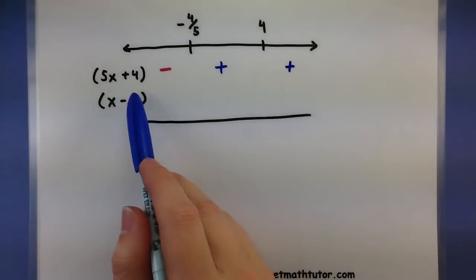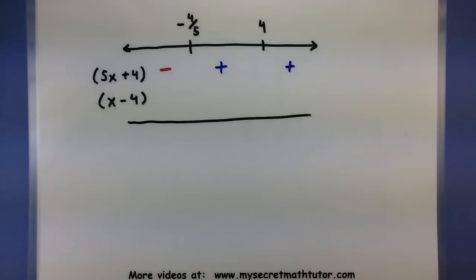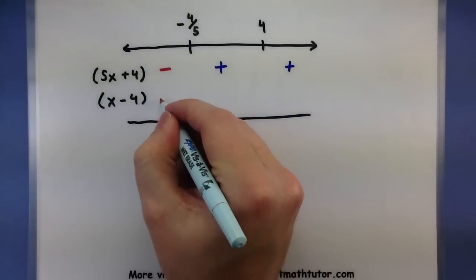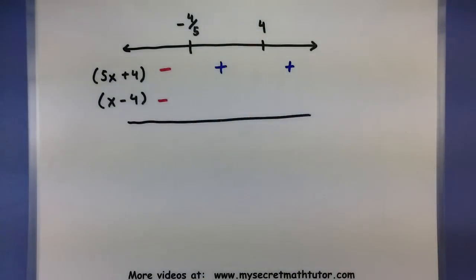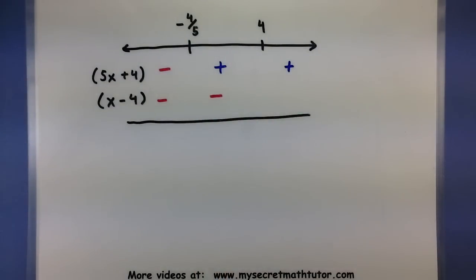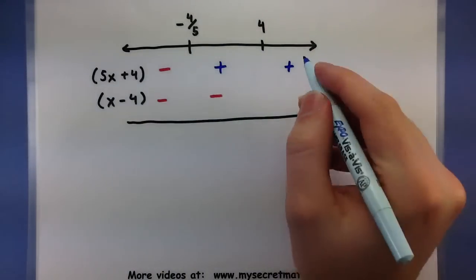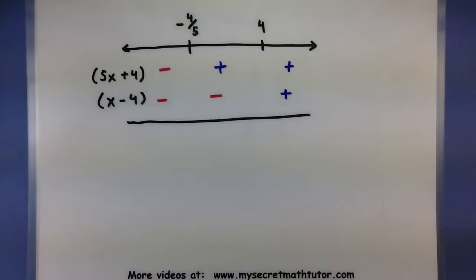Let's play the same game with the second factor, x − 4. Grabbing negative 2 and plugging it in: negative 2 minus 4 gives negative 6. Grabbing zero from the middle interval: 0 minus 4 gives negative 4. And grabbing 5 from the last interval: 5 minus 4 gives positive 1. Now I know what both factors are doing across all intervals.